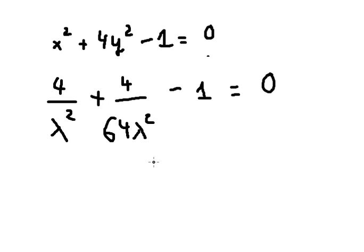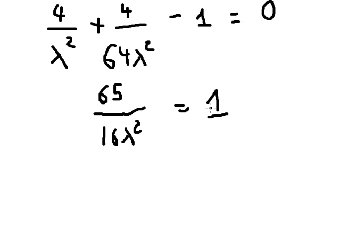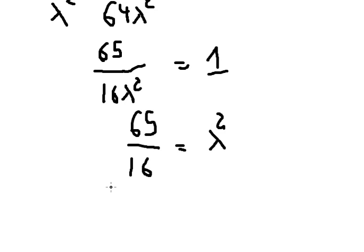Now we can simplify. Adding those fractions gives 65 over 16 lambda squared. We move the negative one to the right, then move lambda squared to the right, giving 65 over 16 equals lambda squared. Taking the square root of both sides gives lambda equals the square root of 65 over four.